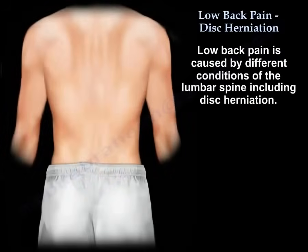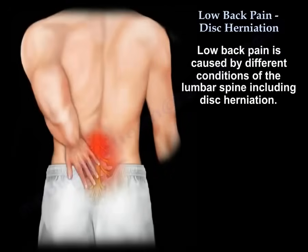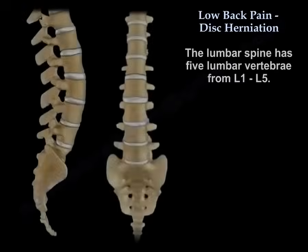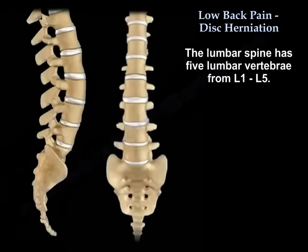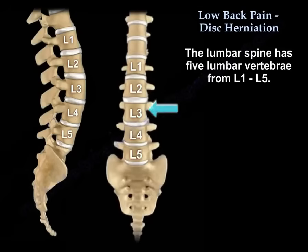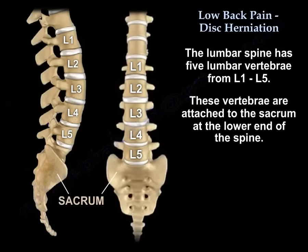Low back pain is caused by different conditions of the lumbar spine including disc herniation. The lumbar spine has five lumbar vertebrae from L1 to L5. As you can see, these are the five vertebrae and they are numbered.